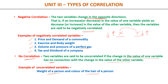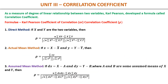Now let us look at what is correlation coefficient. Carl Pearson, a British biometrician, developed a formula called correlation coefficient. This formula was given his name and is thus read as Karl Pearson's coefficient of correlation, or simply correlation coefficient, represented by the Greek letter rho (ρ). We have various formulae for different cases to find this correlation coefficient.